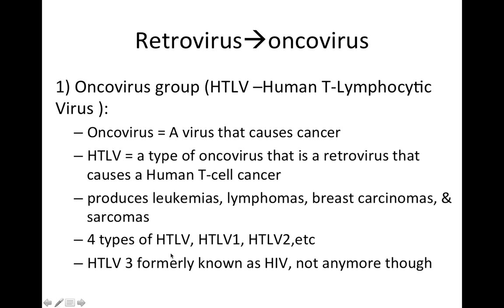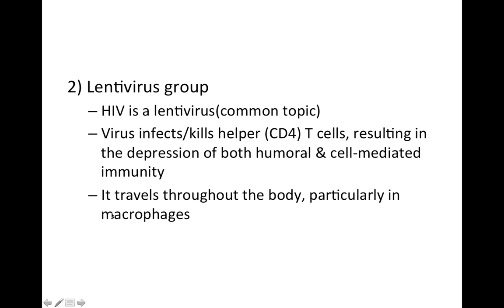There are four types of HTLV, characterized by number: HTLV 1, HTLV 2, HTLV 3, and HTLV 4. HTLV 3 was formerly known as HIV — it's not anymore, it's no longer characterized as HTLV 3, but I have seen this in study materials and practice questions. As for lentivirus, the most frequent question is: HIV is associated with which group? HIV is a lentivirus — this is a common topic and it frequently comes up. These viruses infect and kill helper T cells, CD4 cells.